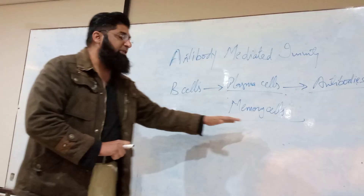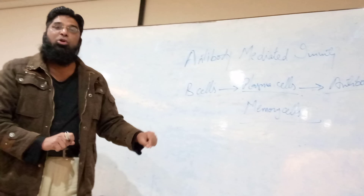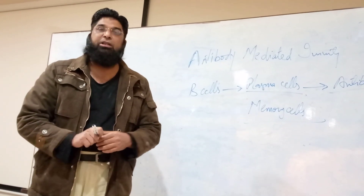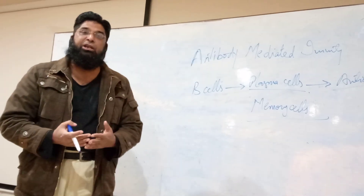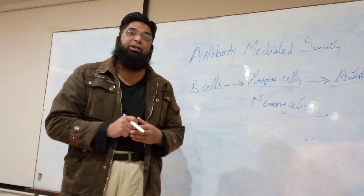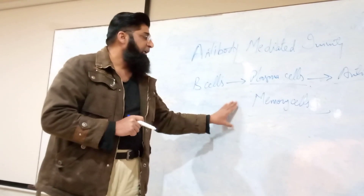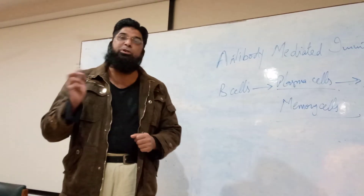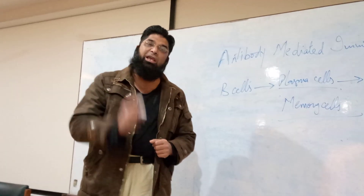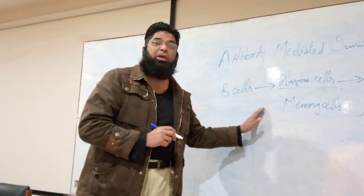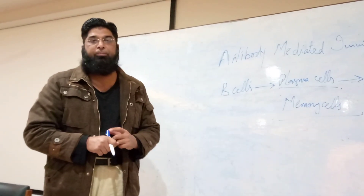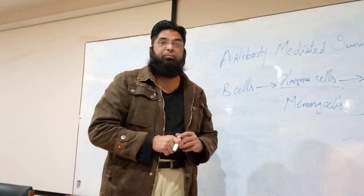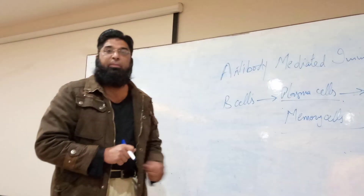These memory cells remain inactive on first exposure to the antigen. Rather, their production is initiated on the first exposure of the antigen, and after that they become dormant. On the subsequent or second exposure of the same antigen, these memory cells become activated. They are freely flowing in blood and lymph. That's why we call them memory cells.